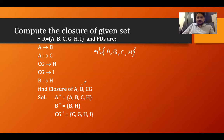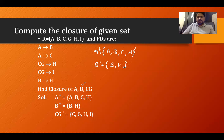Next, find the closure of B. B comes in. B determines H, so H comes in. H determines nothing, and B and H together determine nothing. So the closure of B is {B, H}.